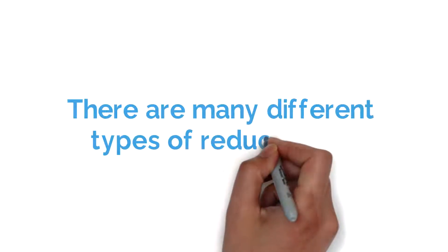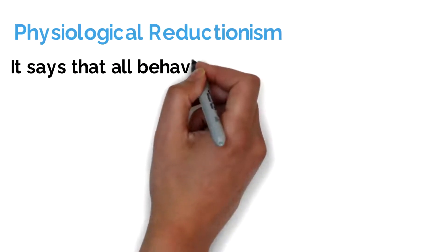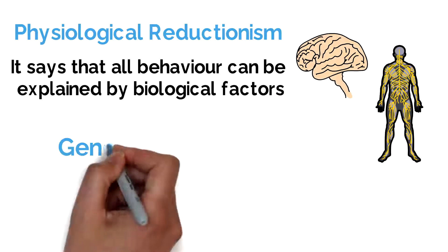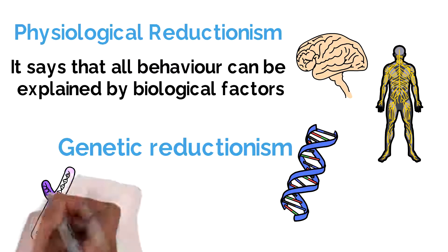There are many types of reductionism. Physiological reductionism, for example, argues that all behavior and experiences can be explained or reduced to biological factors such as hormones or the nervous system, whereas genetic reductionism reduces all causes of behavior to genetic inheritance.